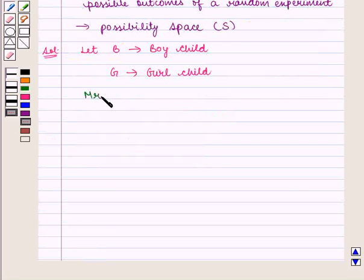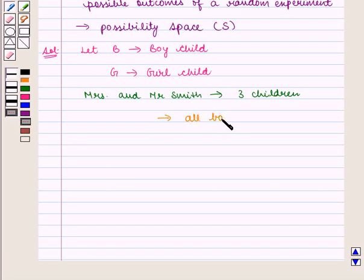Now Mrs. and Mr. Smith have three children. May be all boys, or two boys and one girl, or one boy and two girls, or it could be all girls.